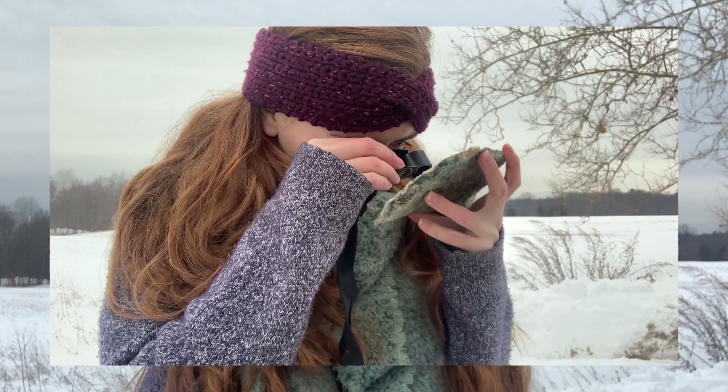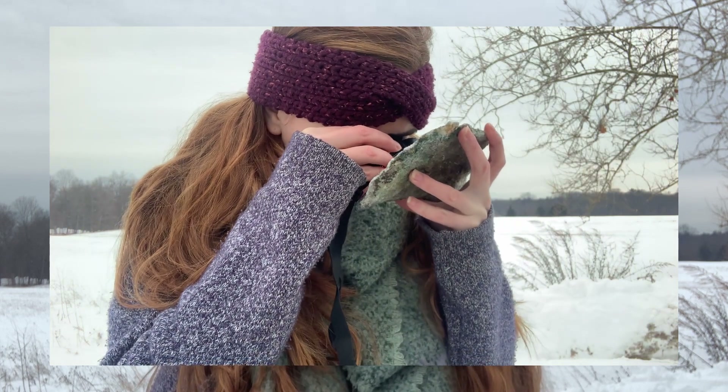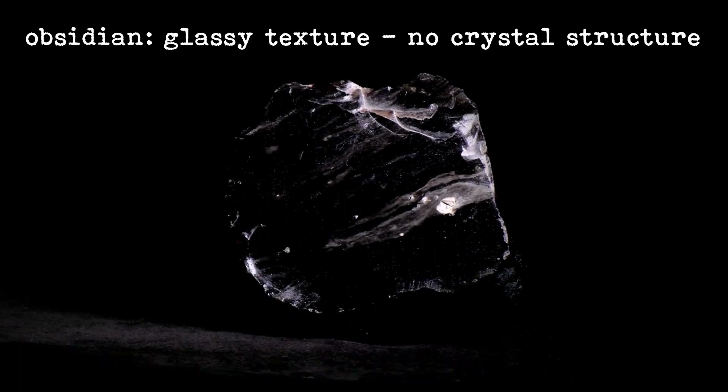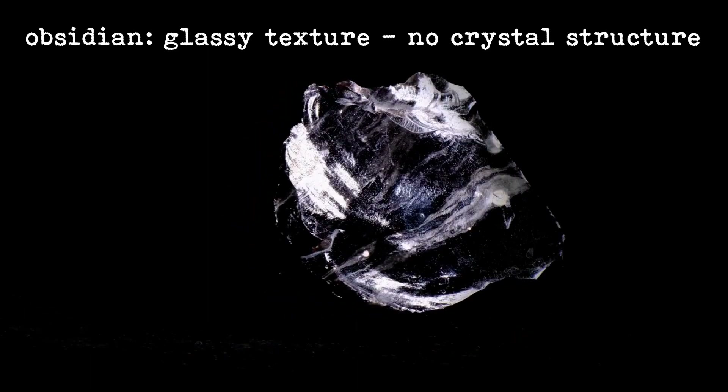This is more common in intrusive igneous rocks because the crystals have a lot more time to grow when they're underground cooling over a long period of time. Sometimes you can see crystals with the naked eye, but sometimes you need something like a hand lens or even a microscope to see the individual crystals. Sometimes a rock cools so quickly that the atoms don't even form a crystal structure — this is what we call a glassy texture. So extrusive igneous rocks have fine-grained or even glassy texture, and intrusive igneous rocks have coarser-grained texture.